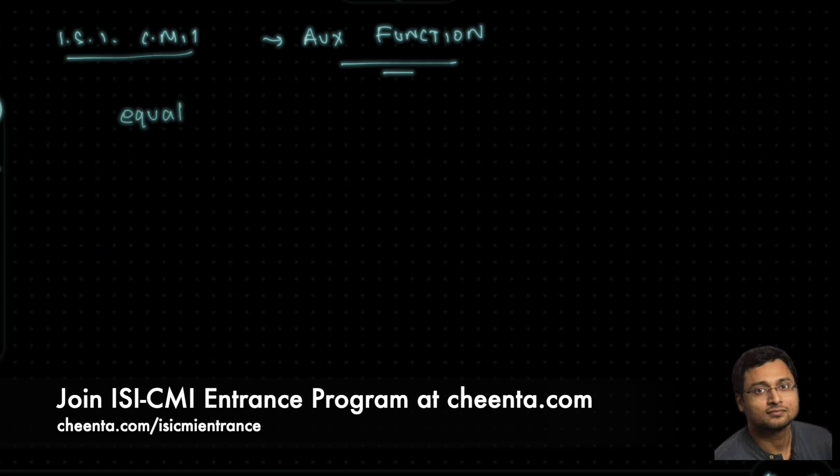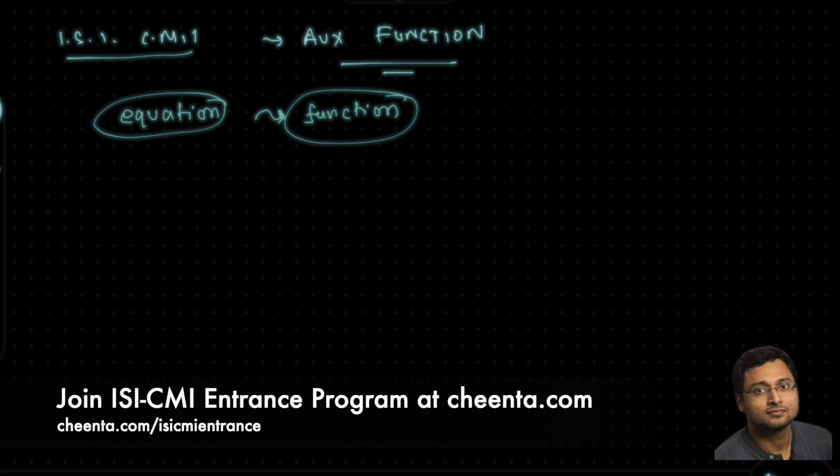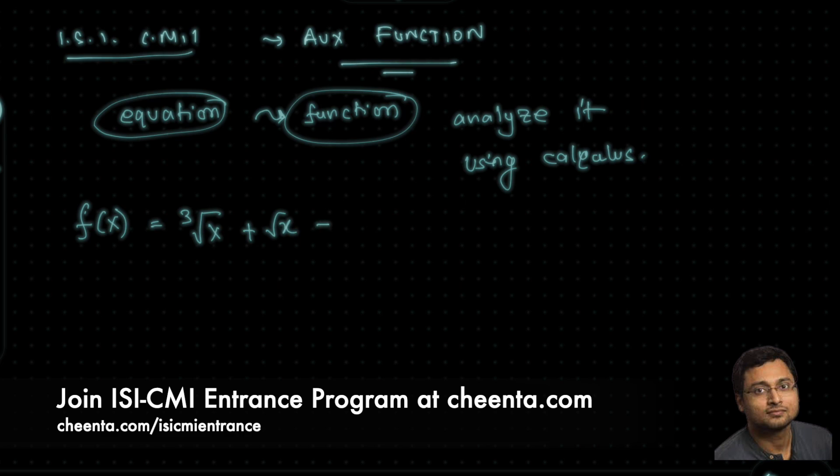We will use that here as well. The idea is really simple: you convert an equation to a function and analyze it using calculus. We will create a function f(x) which is third root of x plus square root of x minus 1.